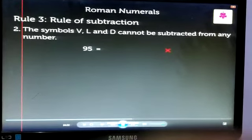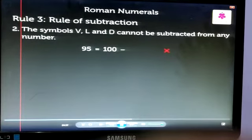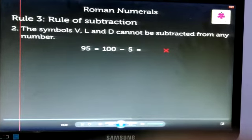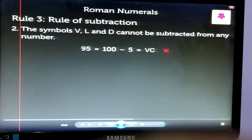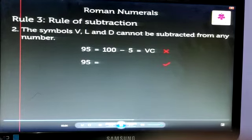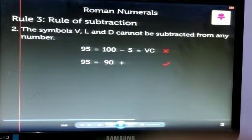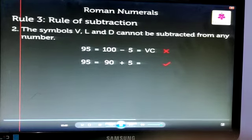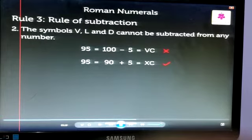95 cannot be written as 100 minus 5 equals VC. 95 should be written as 90 plus 5, which equals XCV.